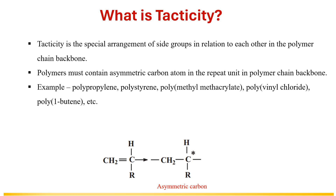For example, polypropylene, polystyrene, polymethyl methacrylate, polyvinyl chloride and others show tacticity as these polymers have an asymmetric carbon atom in their main chain. Whereas polymers such as polyisobutylene, polyethylene, and polytetrafluoroethylene do not show tacticity.